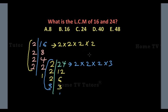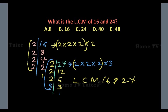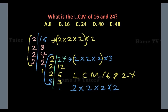Now we look for the lowest product of factors which contains all of the prime factors of the numbers. In 16 we have four 2's. Three 2's are common factors of both 16 and 24. We write out the products of the four 2's: 2 times 2 times 2 times 2. Then for the next factor, 3 — which is only in 24, not in 16 — we also bring down 3.